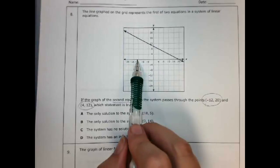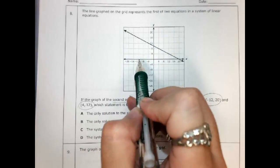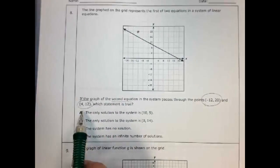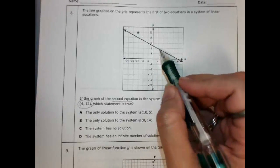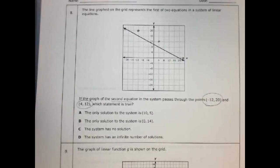Negative 12 and 20 is right here, and 4 and negative 12. 4 and positive 12 right here. So I graph those two there.